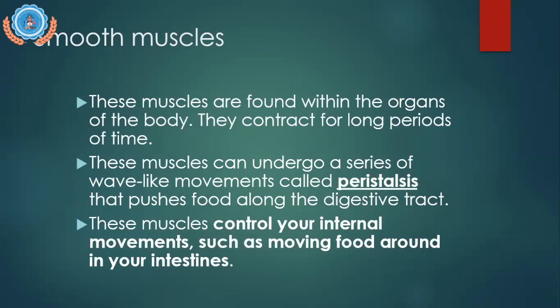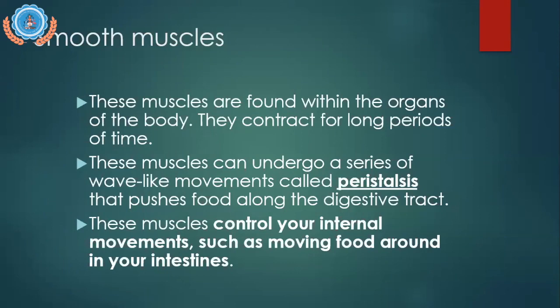Smooth muscles can undergo a series of wave-like movements called peristalsis that pushes food along the digestive tract. When you swallow food, smooth muscle cells in your esophagus push the food downward — we call this process peristalsis. These muscles control your internal movements, such as food moving around in your intestines.